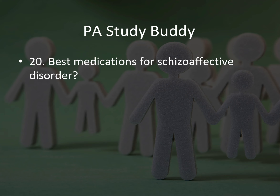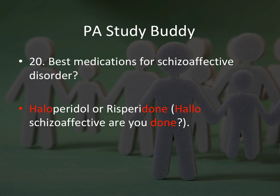Question twenty: best medication for schizoaffective disorder? The answer is haloperidol or risperidone. The way I remember this: 'Hello, schizoaffective, are you done?' — 'hello' for haloperidol, 'done' for risperidone. I know clozapine is for schizophrenia, so if the question is about schizoaffective disorder, I point to haloperidol or risperidone using that mnemonic.